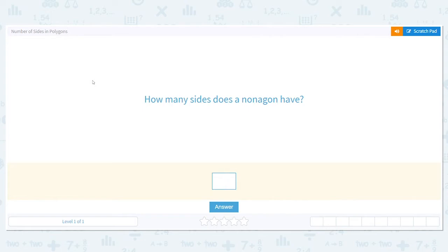So our first question says: How many sides are in a nonagon? Looking at it, I see non. Non seems like nine, so a nonagon has nine sides.